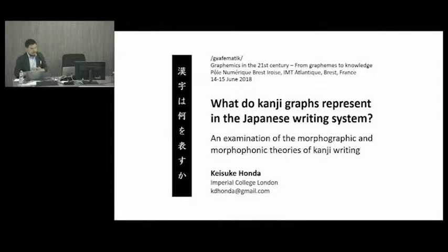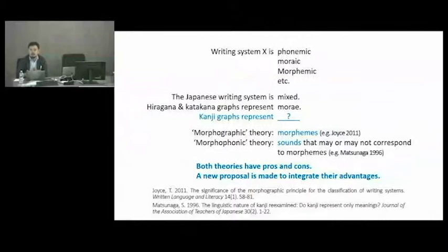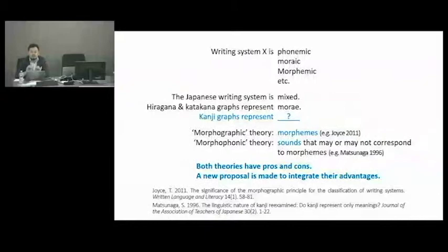The starting point of this study is a practice that is widely observed in the linguistic study of writing systems. In this practice, a given writing system is described or referred to as being phonemic, moraic, or morphemic. The underlying assumption is that individual writing systems can be and perhaps should be described in terms of a single type of linguistic entity such as the phoneme, mora, or morpheme.